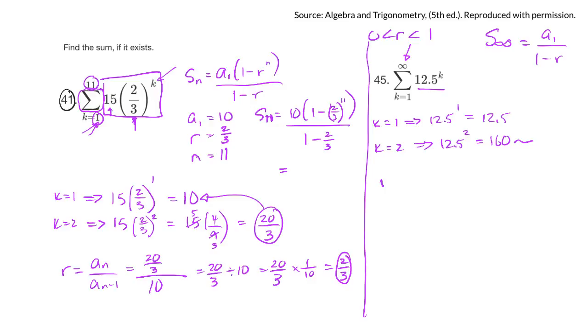So to find my ratio, I take this number, 160-ish, divided by 12.5, that number's going to be big. It's going to be greater than 1. If it's greater than 1, I cannot use that formula, because the ratio has to be between 0 and 1.